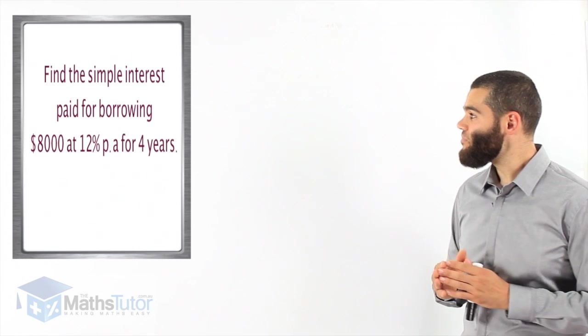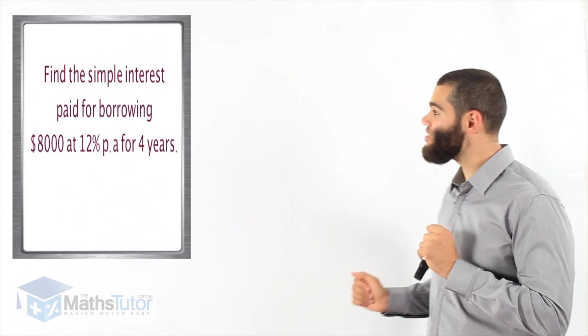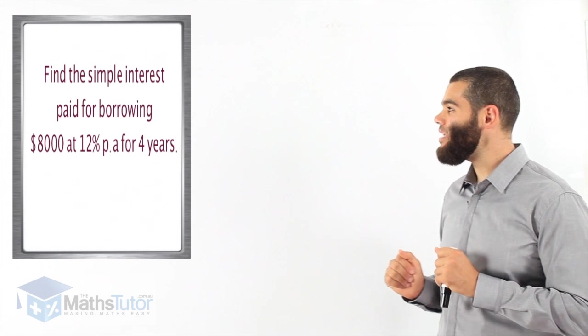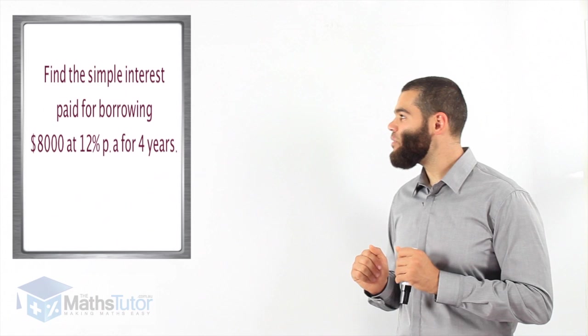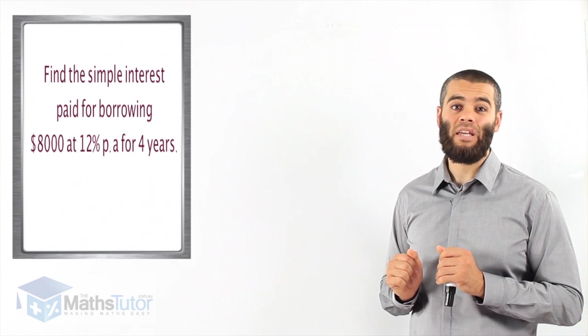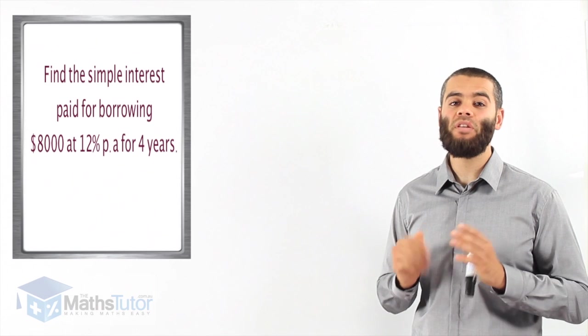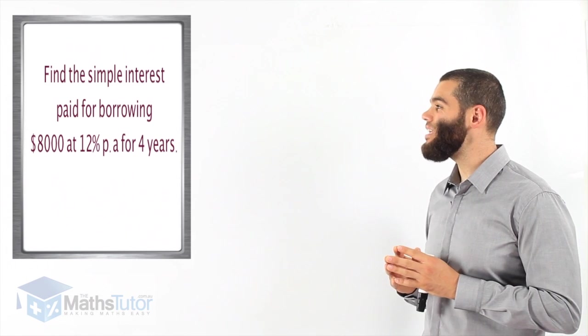The example says, find the simple interest paid for borrowing $8,000 at 12% PA, meaning per annum, meaning per year, for four years.